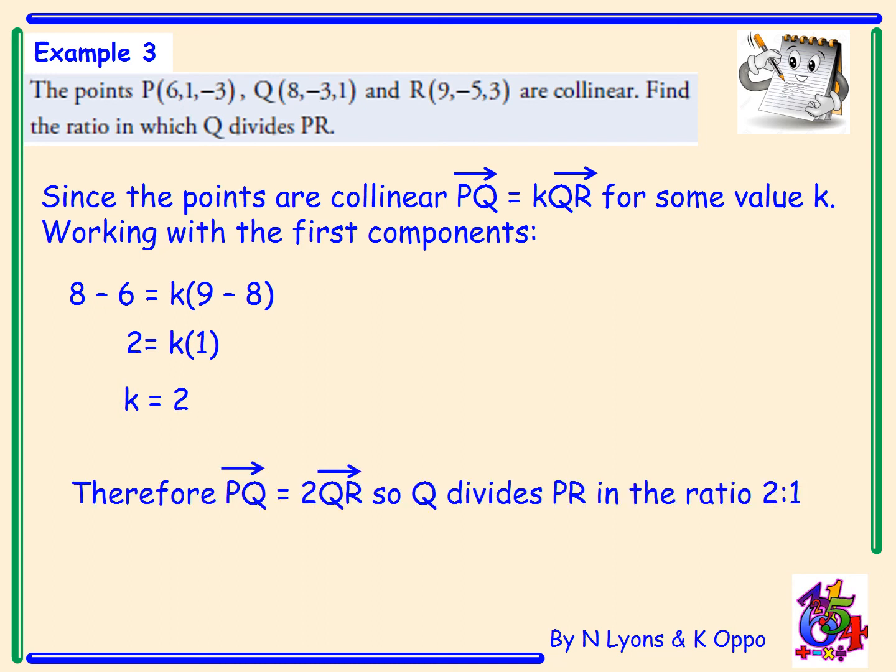Therefore, we can say that vector PQ is equal to 2 lots of vector QR. Therefore, Q divides PR in the ratio 2:1.